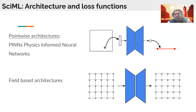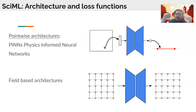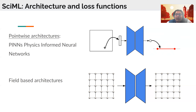Physics-informed neural networks have been super successful in solving a wide variety of partial differential equations. People are also developing a lot more analysis behind them — understanding convergence rates, generalization, and approximation properties — and coming up with elegant mathematical theory similar to the PDE analysis we have several decades of history and elegance on.